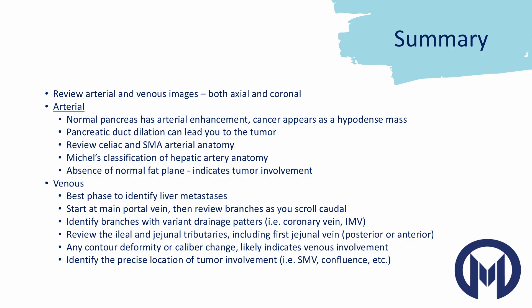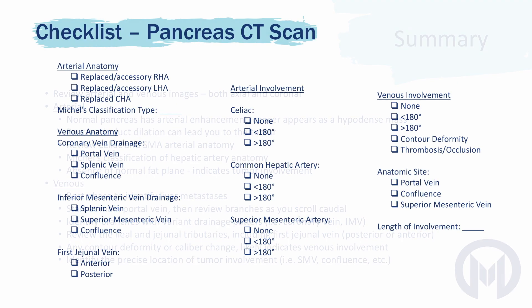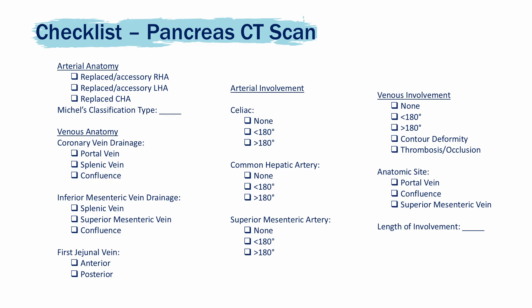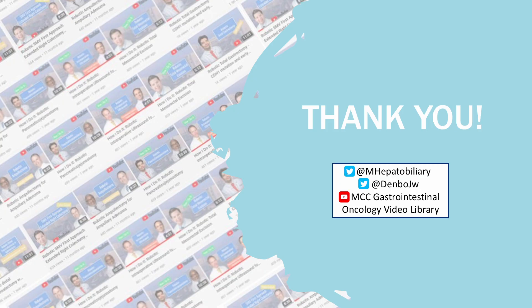Here is a checklist we utilize in our preoperative conference. It includes arterial anatomy, venous anatomy, and then arterial involvement and venous involvement. This is what this patient's CT scan would have been — it gives pretty significant information about what's really going on. Please like and subscribe to the channel so you don't miss any upcoming anatomy videos.